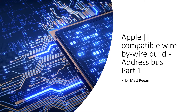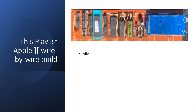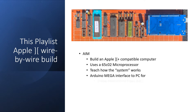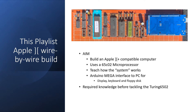And don't forget, there is a Part 2 coming, and a little bit of a warning for those new to computer architecture — this will probably be the trickiest part of the build. The end of this playlist is to show the build for this board. It's an Apple II compatible, and it uses a 65C02 microprocessor, the idea being to show how the microprocessor works in the context of a system. I've used an Arduino Mega, connected to a PC for display, keyboard, and floppies. And this really is pre-work visit knowledge before moving on to the Turing 6502.